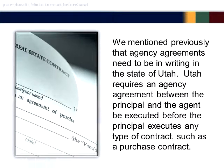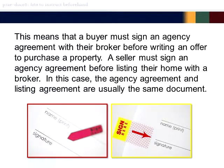Utah requires an agency agreement between the principal and the agent be executed before the principal executes any type of contract, such as a purchase contract. This means that a buyer must sign an agency agreement with their broker before writing an offer to purchase a property. A seller must sign an agency agreement before listing their home with a broker. In this case, the agency agreement and the listing agreement are usually the same document.